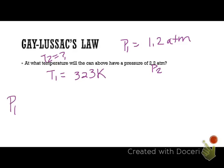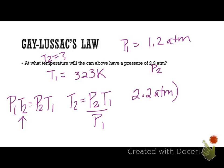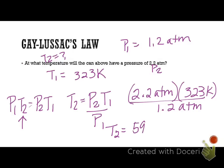So again, P1 times T2 is equal to P2 times T1. We're solving for T2 this time. So T2 is going to be equal to P2 T1 over P1. Now we plug and go, so P2 is what they gave us in this problem, 2.2 atmosphere. Our T1 was 323 Kelvin. We divide that by P1, which was from the original problem, 1.2 atmosphere. When we get that, T2 is going to be equal to 592 Kelvin.